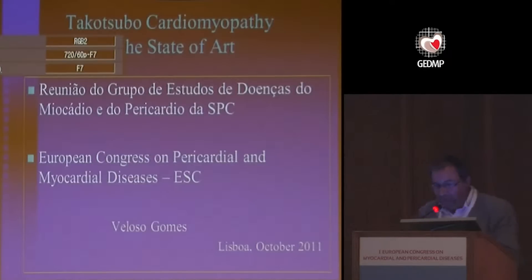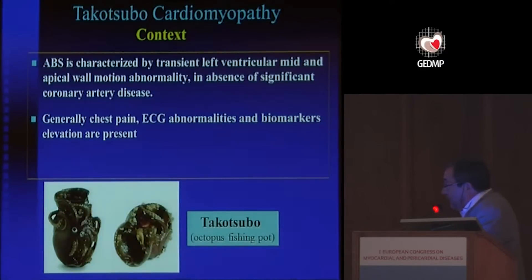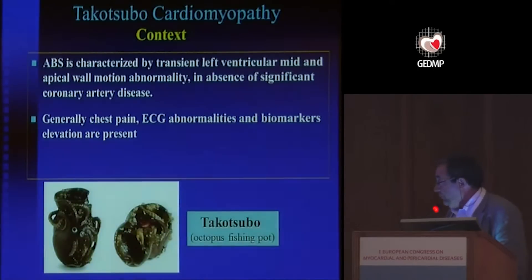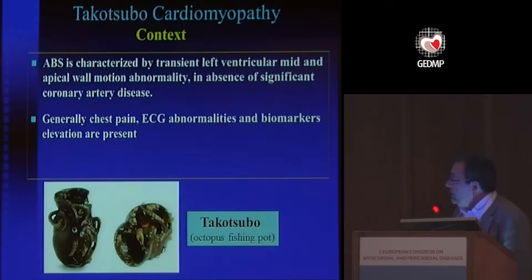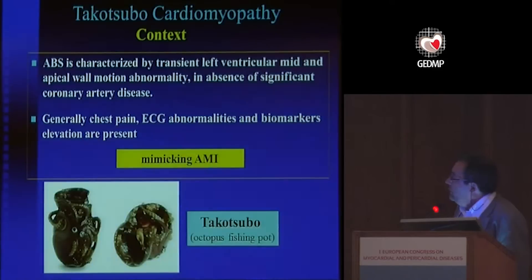Good afternoon to all. My talk is about apical balloon syndrome, which is characterized by transient left ventricular mid- and apical wall motion abnormality in the absence of significant coronary artery disease. Generally, the clinical and electrocardiographic presentation and biomarkers are very similar to myocardial infarction.